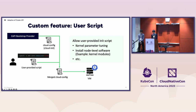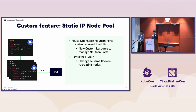Let us share several examples of our custom features. One of them is user script. Users often want to customize their worker nodes — for example, configuring kernel parameters, or increasing ARP table entries when they need to access many hosts. Another use case is installing node-level software; some users install a network emulator kernel module and chaos daemon for chaos testing. Our VerdaMachine controller merges the user-provided script with the cloud-init config provided by the Cluster API bootstrap provider. Another example is static IP node pool, which assigns predefined IPs to worker nodes — useful when working with IP ecosystems because nodes keep the same IPs even when recreated.